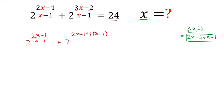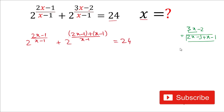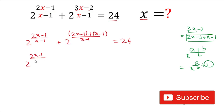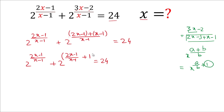We put this in brackets, divided by x-1, equal to 24. Now, using the rule that x^((a+b)/b) can be written as x^(a/b + 1), since b/b equals 1, we apply this here. So we write 2^((2x-1)/(x-1)) plus 2^((2x-1)/(x-1) + 1), equal to 24, and these are powers of 2, so we put them in brackets.